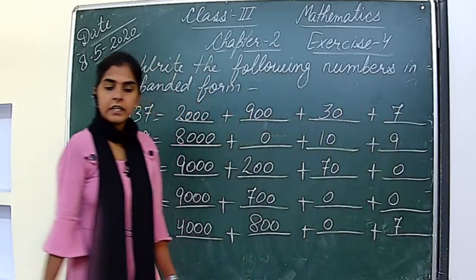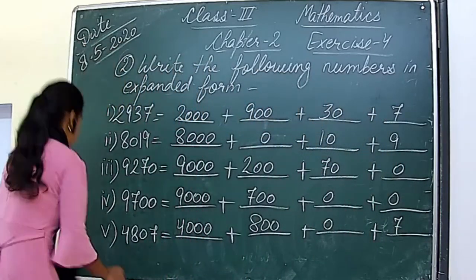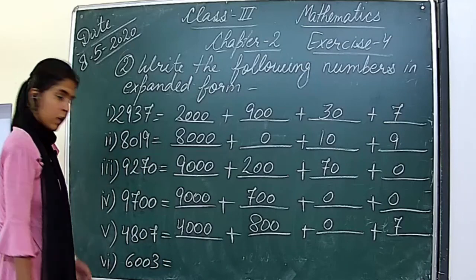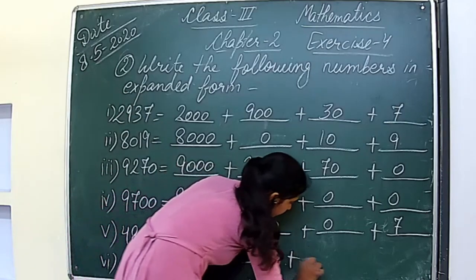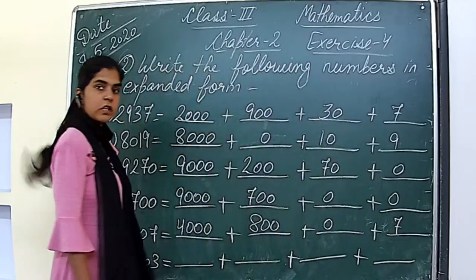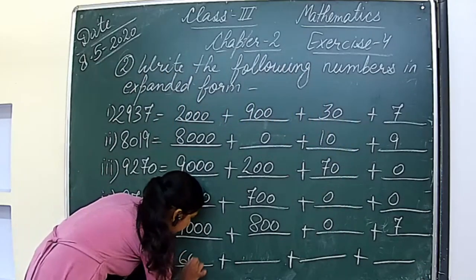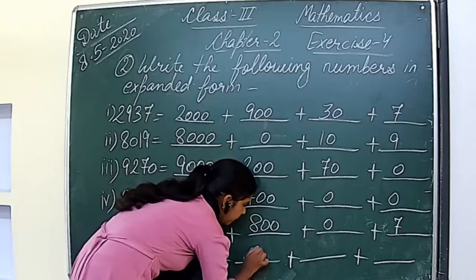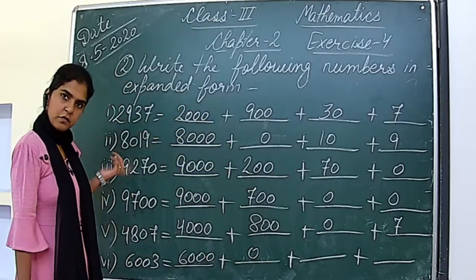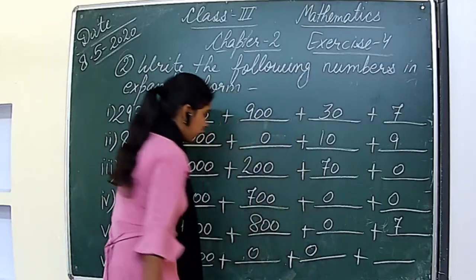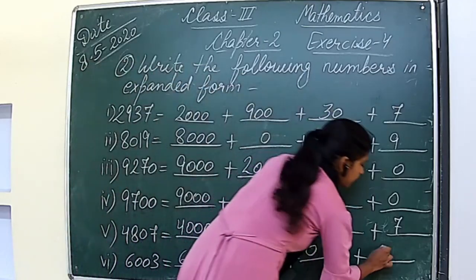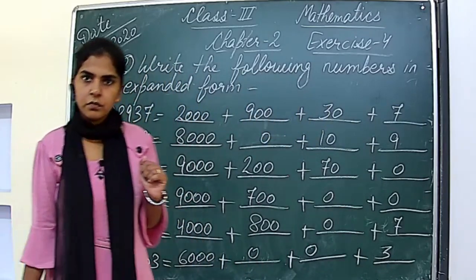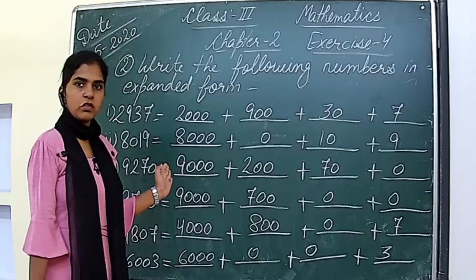The next part is 6003. Let's start writing its expanded form. Place value of 6 will be 6000. Place value of 0 will be 0. Again, place value of the next 0 will be 0. And place value of 3 will be 3. This is the solution of question number 2. You have to write down this question in your notebook.